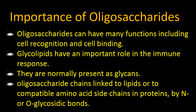Oligosaccharides are important because they can have many functions including cell recognition and cell binding. In cell recognition, cells have an ability to differentiate between neighboring cells. In cell binding, the cell decides how it will bind with other molecules. Glycolipids have an important role in immune response; glycolipids are formed when oligosaccharides join with lipids. They are normally present as glycans — oligosaccharide chains linked to lipids or to compatible amino acids in proteins by N- or O-glycosidic bonds.